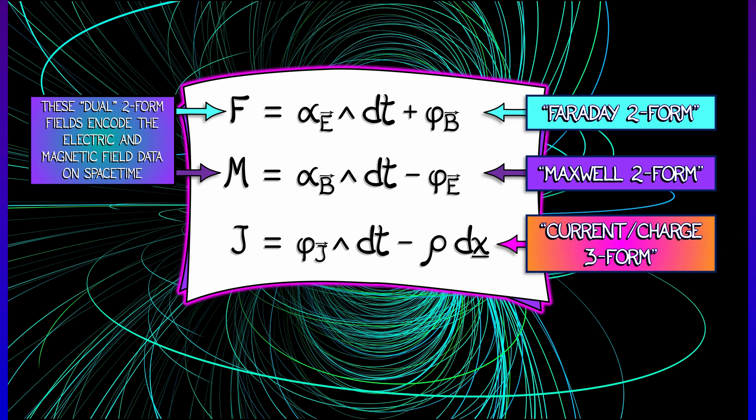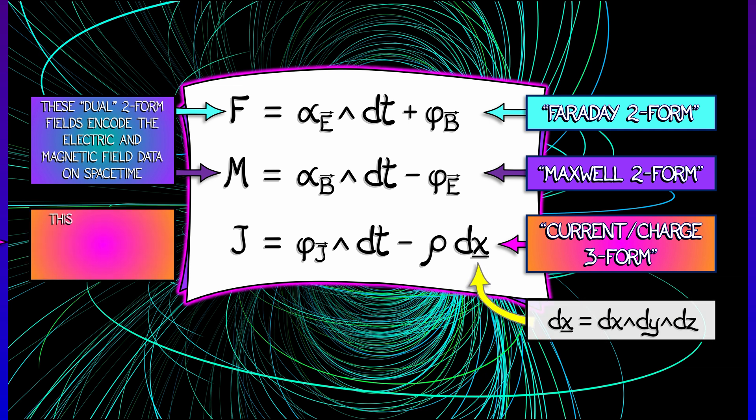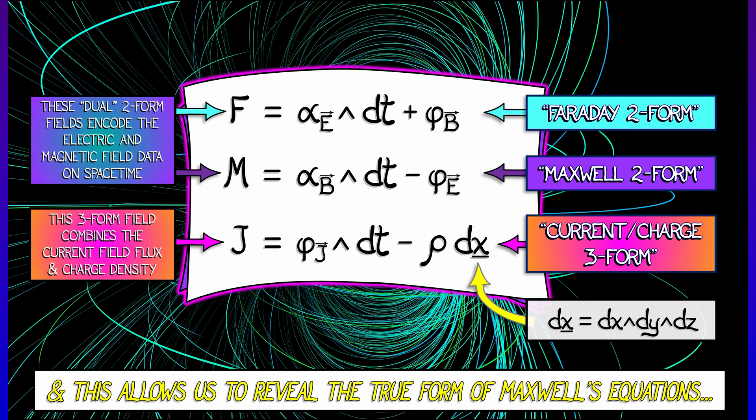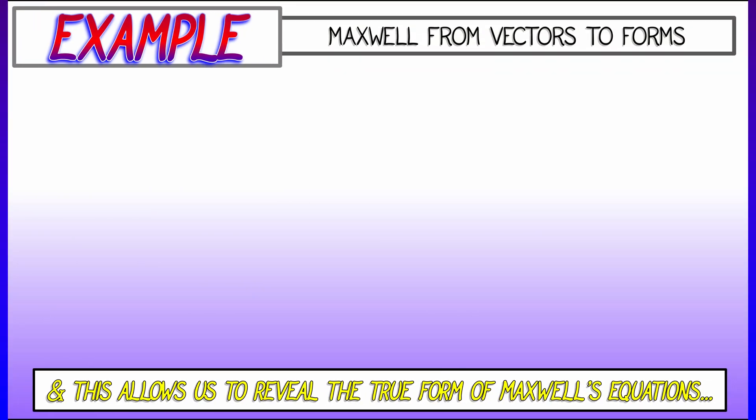Now, there's a third item that we need to look at. This is called j. It is a three-form field that is given by the wedge of the flux two-form of the current with dt, and then you subtract off the charge density rho times the three-form dx, the space three-form. Now, this three-form field j is combining together what the current is doing and what the charge is doing. Okay, so we've got f, we got m, we got j. How are we going to use these to reveal the true form of Maxwell's equations? Well, this is going to take some work. So buckle up. Let's go.